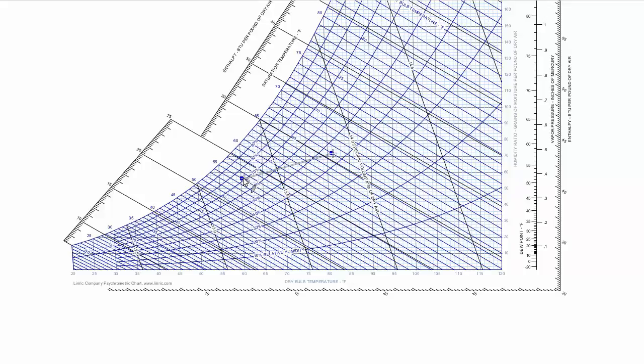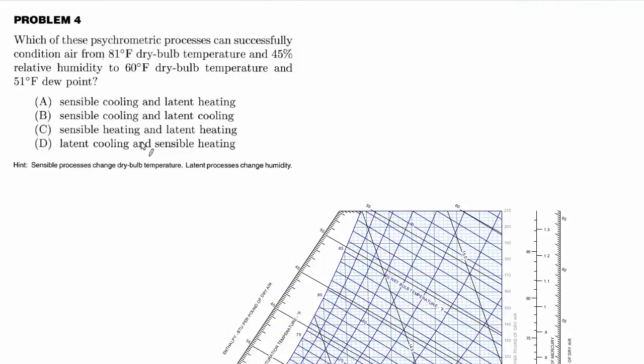So we're starting from this condition and we're ending up here. And clearly, you can see that this is sensible cooling because the dry bulb temperature is going from 81 to 60 degrees. So right off the bat, we can eliminate these two choices here because they say sensible heating.